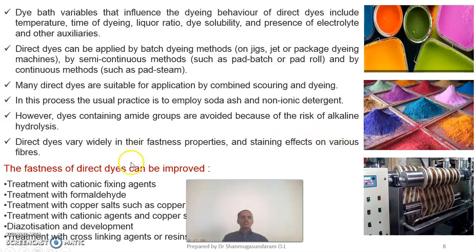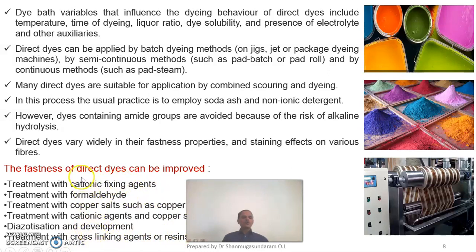Now we will discuss washing fastness improvement, rubbing fastness improvement, and light fastness improvement. These fastness properties can be improved by: treatment with a cationic dye fixing agent; treatment with formaldehyde; treatment with copper sulphate and copper salts; treatment with a cationic agent and copper sulphate in combination; diazotisation and development; or treatment with a cross-linking agent or resins. By means of any one of these treatments, washing fastness, light fastness, and rubbing fastness of the direct dyed material can be improved.